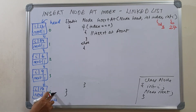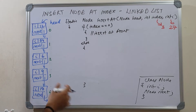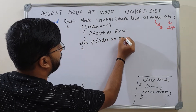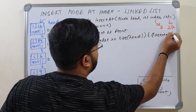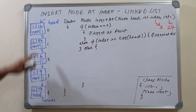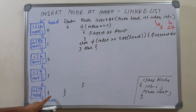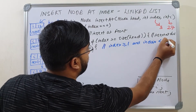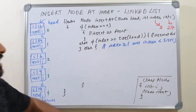There is one more case to handle: when your index is at the last. When your index is equal to the size or greater than equal to size — in some cases, even if it is greater than equal to size, you insert it at the end. So you can handle another case: else if index is greater than equal to the size of the list, you insert at end. Otherwise, this is the case where index is greater than 0 and less than size, and you have to insert between two nodes.